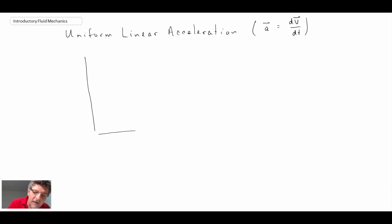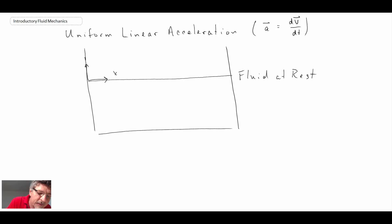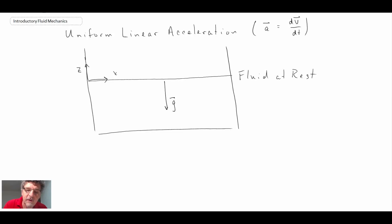I'm going to draw out a container and try to visualize what's happening. Originally, when the fluid is at rest, that is what the surface looks like. I'll draw a coordinate system with x in the horizontal direction and z in the vertical. Normally when the fluid is at rest, the gravity vector acts downward and we have a pressure gradient in the vertical direction with no acceleration.